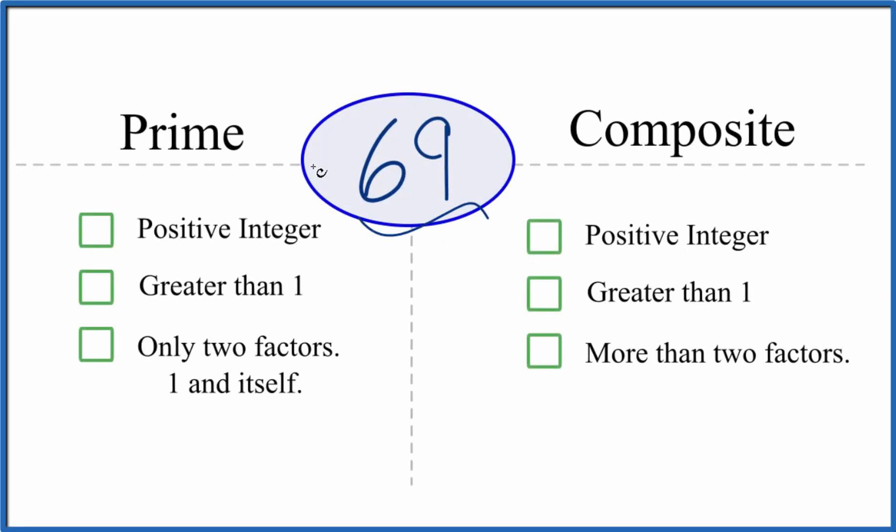The question is whether 69 is a prime or a composite number, and here's how you can tell. So let's look first to see if 69 is prime.